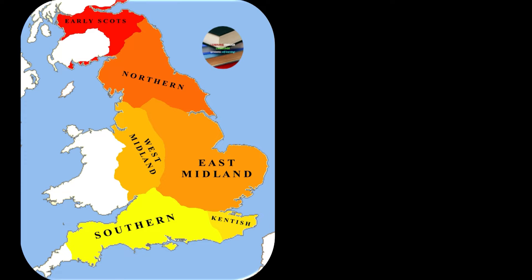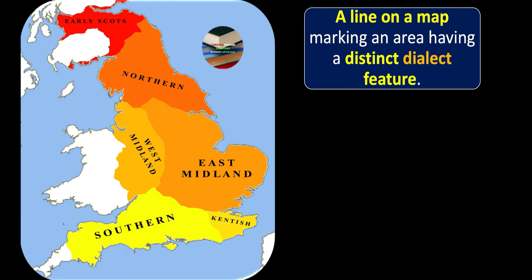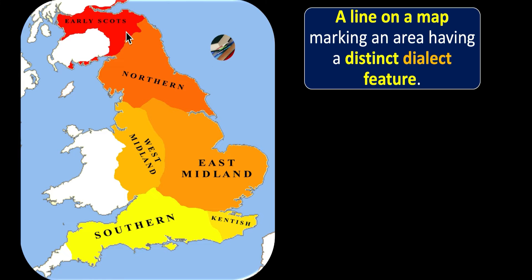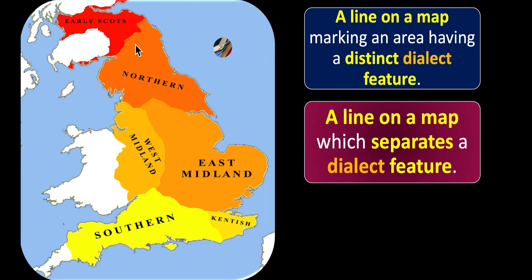Now let's discuss what an isogloss is. An isogloss is a line on a map marking an area having a distinct dialect feature. You can notice here we have a line on a map — these lines mark an area. This line makes earlier Scots and northern dialects different from each other. Likewise, we have different lines separating dialect features.